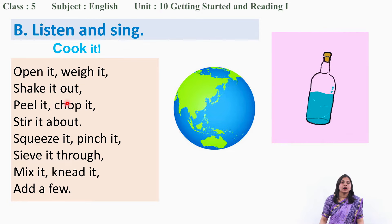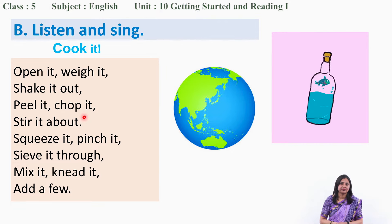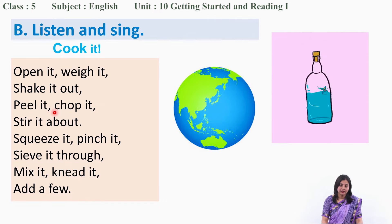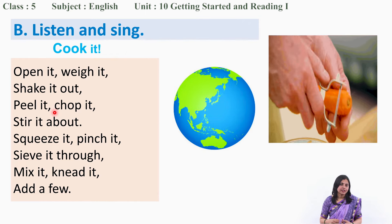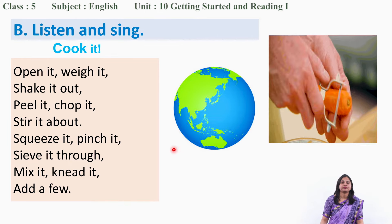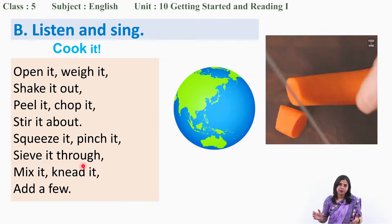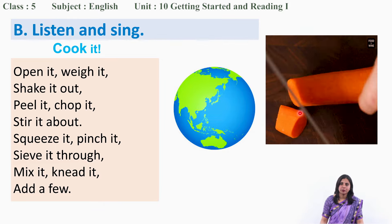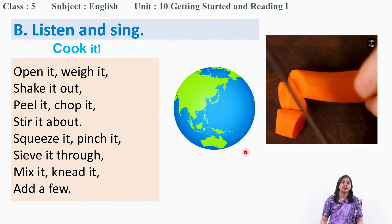Peel it — do you help your mother in the kitchen? Peel means to take out the uppermost surface. You see here the carrot is being peeled. Now what do you mean by chop? Chop means to cut into pieces. You see the carrot is cut into pieces — this is called chop.